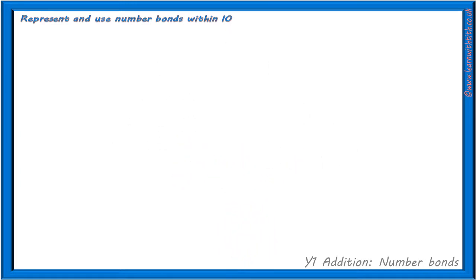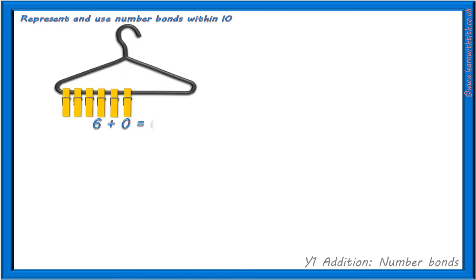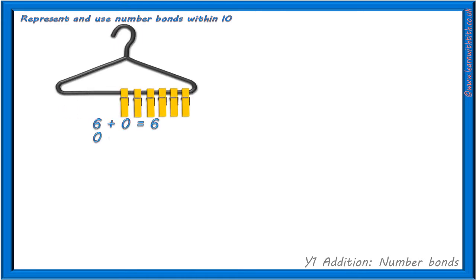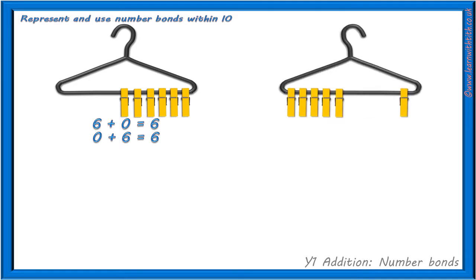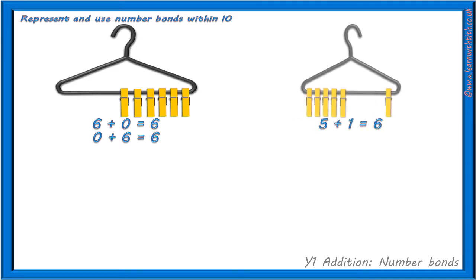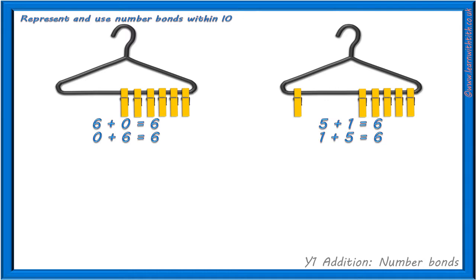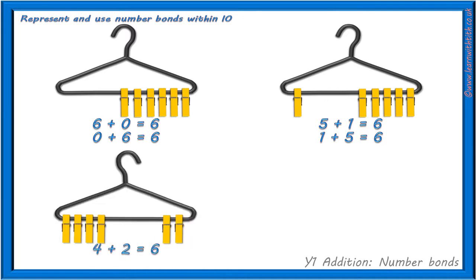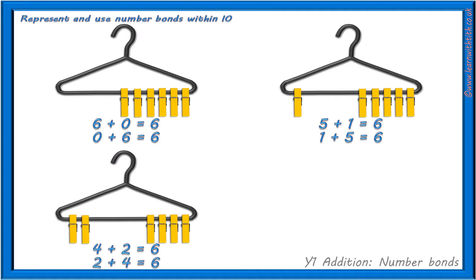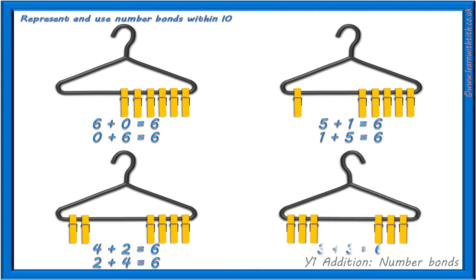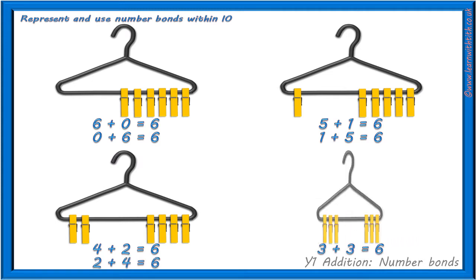Working with 6 pegs, we discovered: 6 add 0 equals 6, 0 add 6 equals 6, 5 add 1 equals 6, 1 add 5 equals 6, 4 add 2 equals 6, 2 add 4 equals 6, and 3 add 3 equals 6.